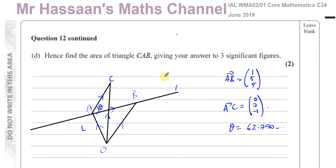Now I'm going to be answering part D from the June 2019 Core Mathematics C3-4 International A-Level paper. I've already answered parts A, B, and C in a previous video, which the link for that should show in the card on the top of the screen, and also on one of the end screen videos. I'll put the previous video there so you can go and see the previous parts if need be.